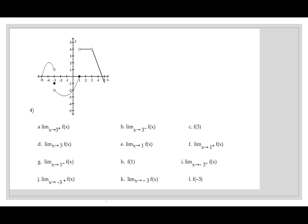One more graph. The limit as x goes to 3 from the positive side: here's 3, the right side is this line coming up, and the y value is 4. From the negative side, I also get 4. F of 3 — there is no solid dot for 3, so f of 3 does not exist. But the limit as x goes to 3: I look left and right, they both say 4, so the limit is 4. Notice the two sides are touching even though there's an open circle — the left touches the right, which says we have a limit.